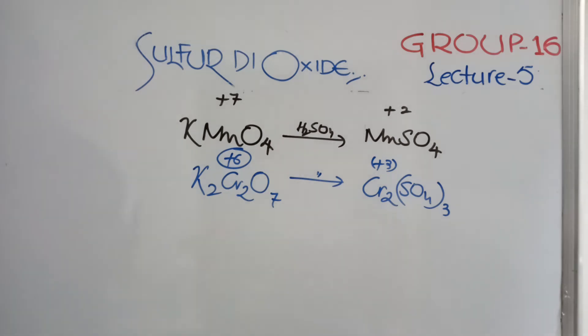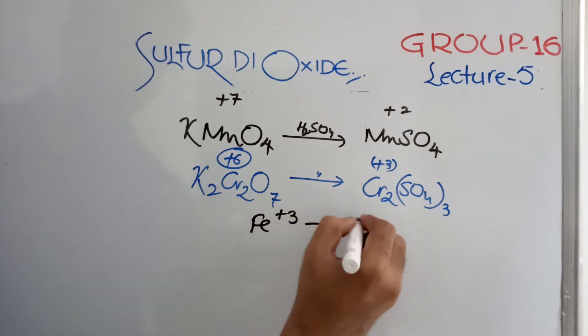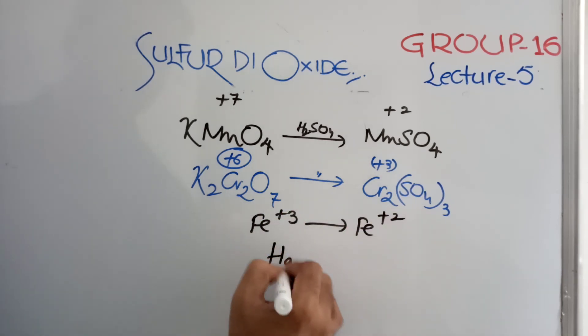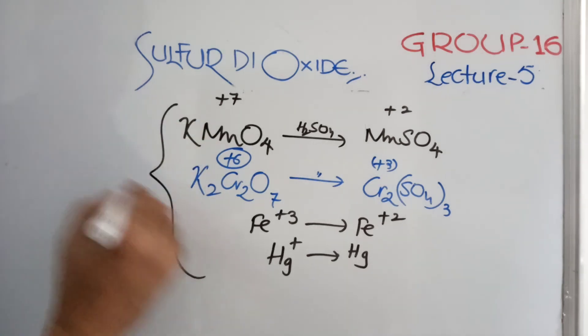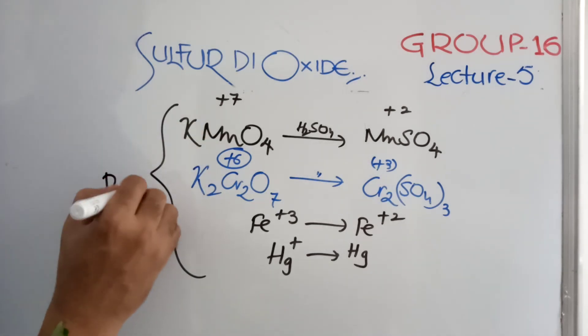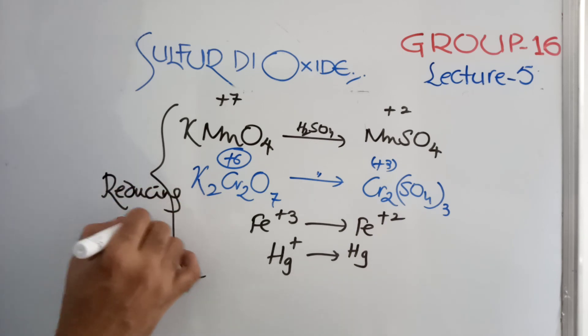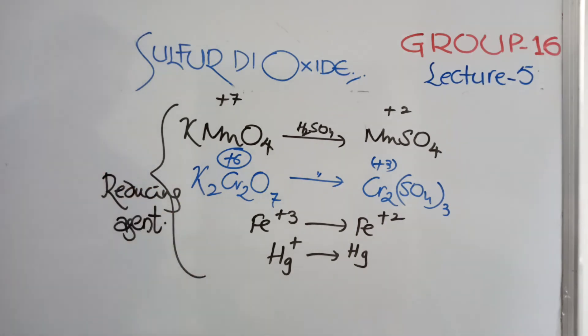So, this is a reduction process, you can say. Ferric salts, if you take, Fe plus 3. Fe plus 3 is reduced to Fe plus 2. Hg plus you take, that will be reduced to Hg. Mercurous to mercury. Ferric to ferrous. Potassium dichromate sulfate. Potassium permanganate to manganese sulfate. All these reactions. In all these reactions, it is going to convert it to SO3. It undergoes oxidation and reduces all these. So, these are all reduction reactions as a reducing agent.